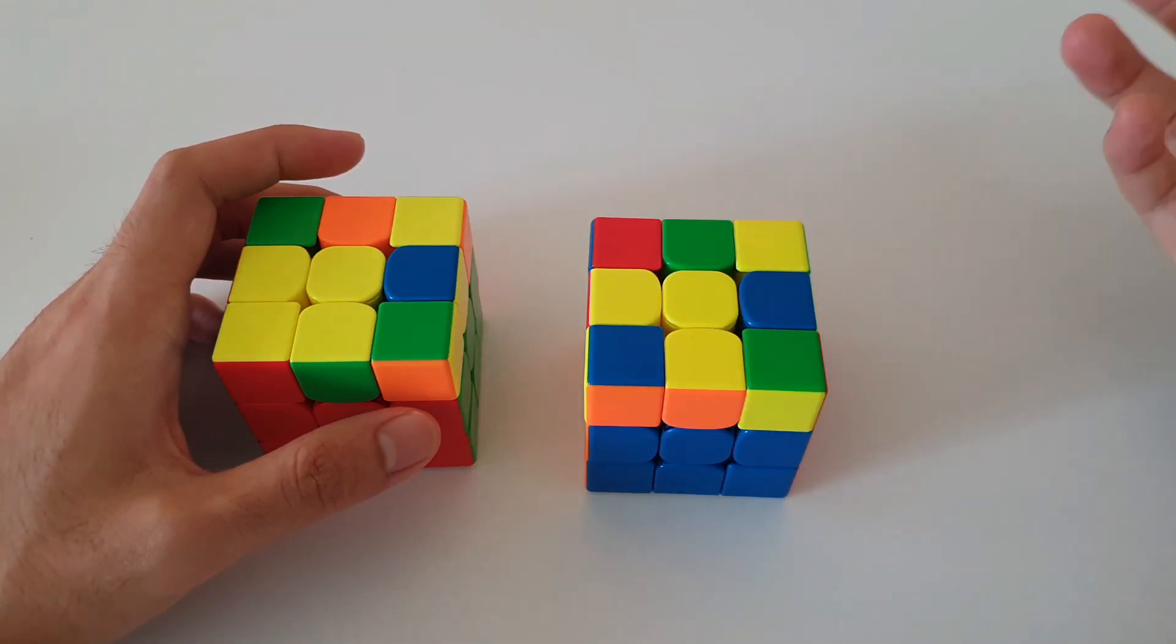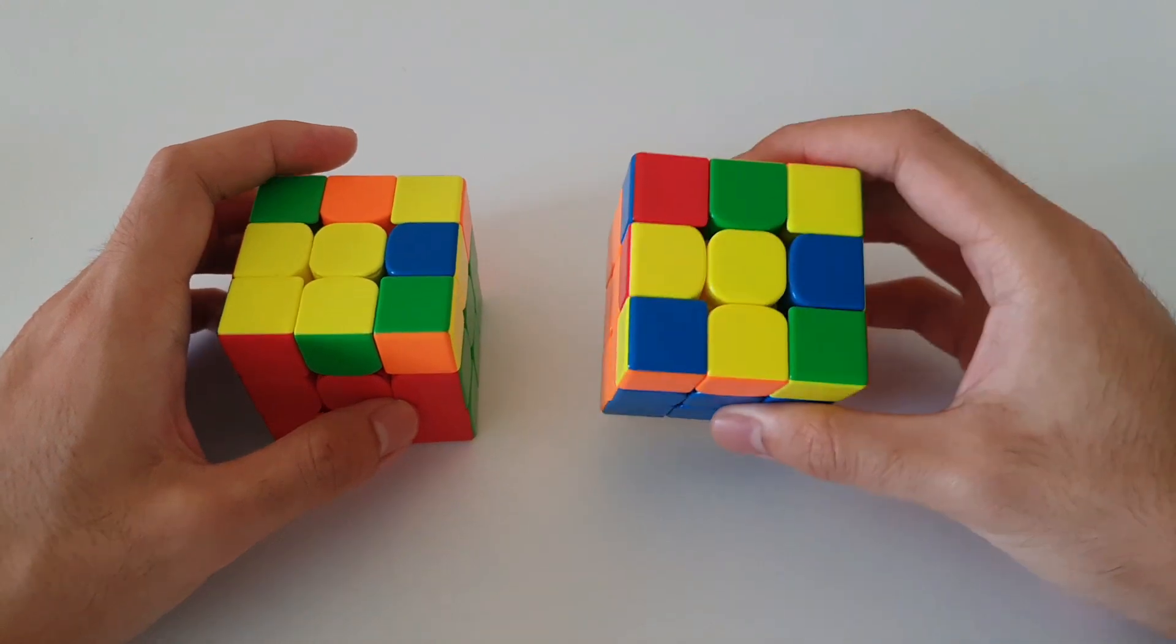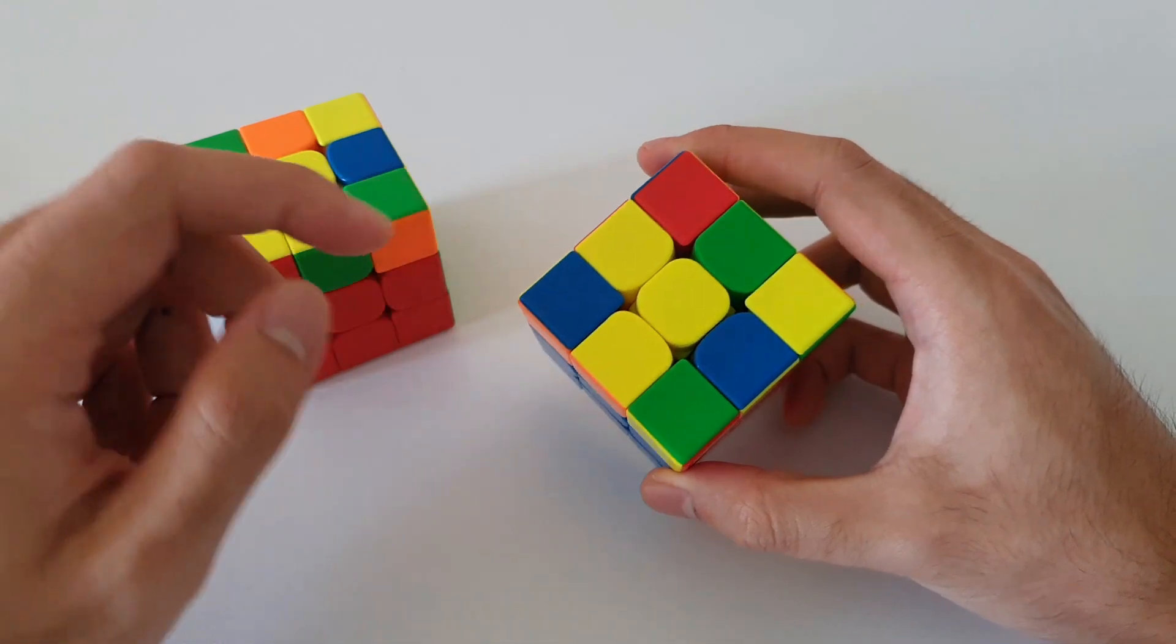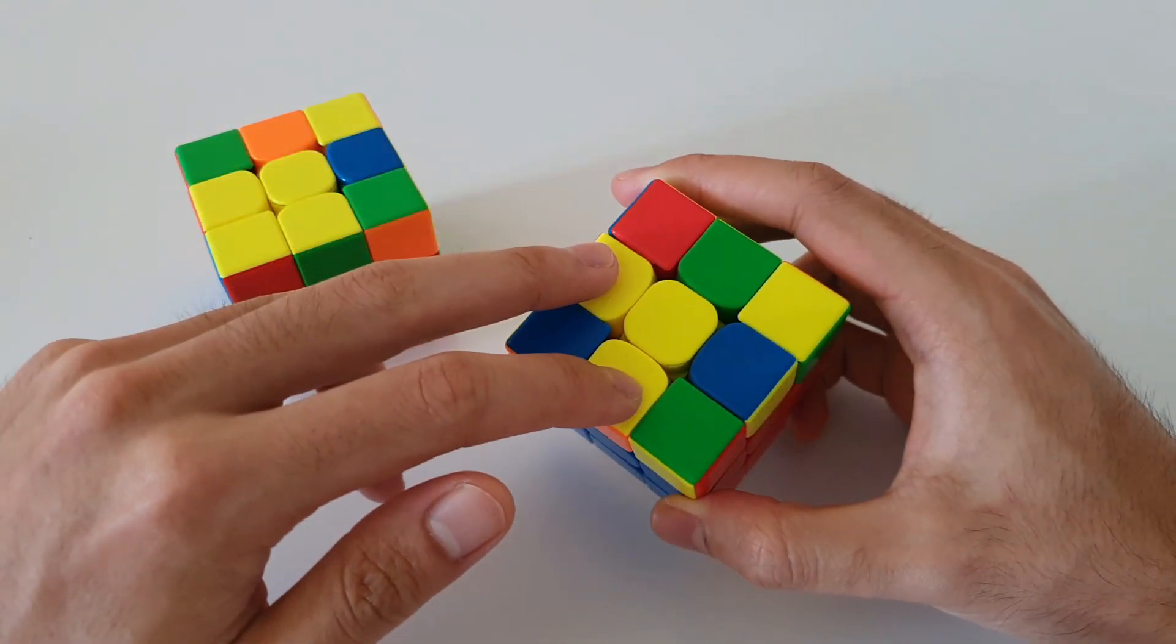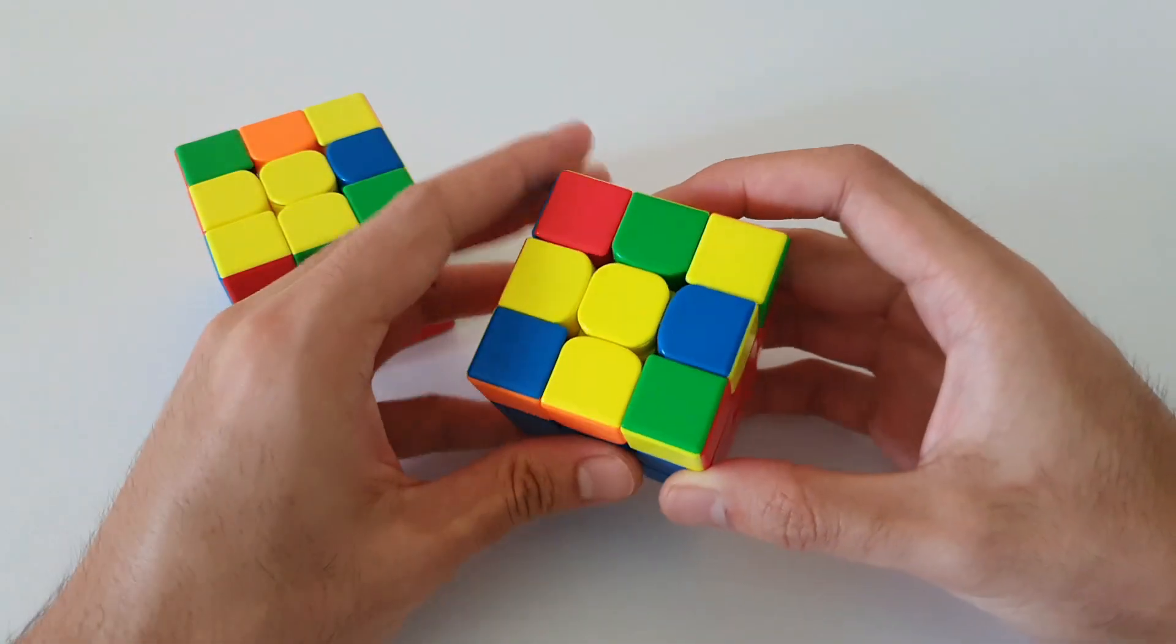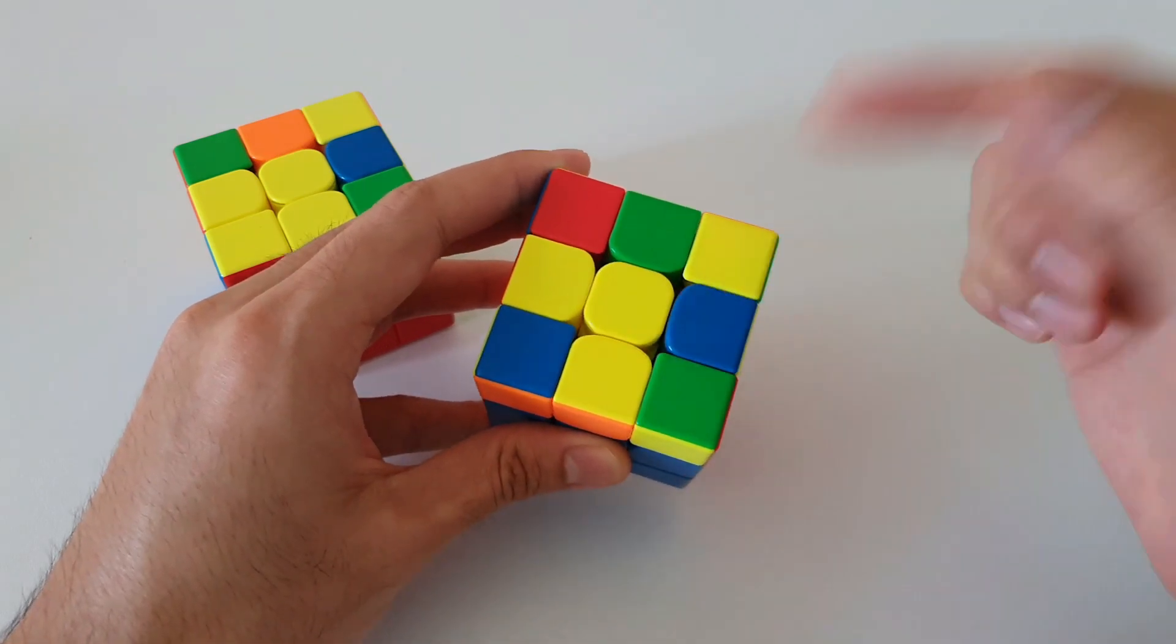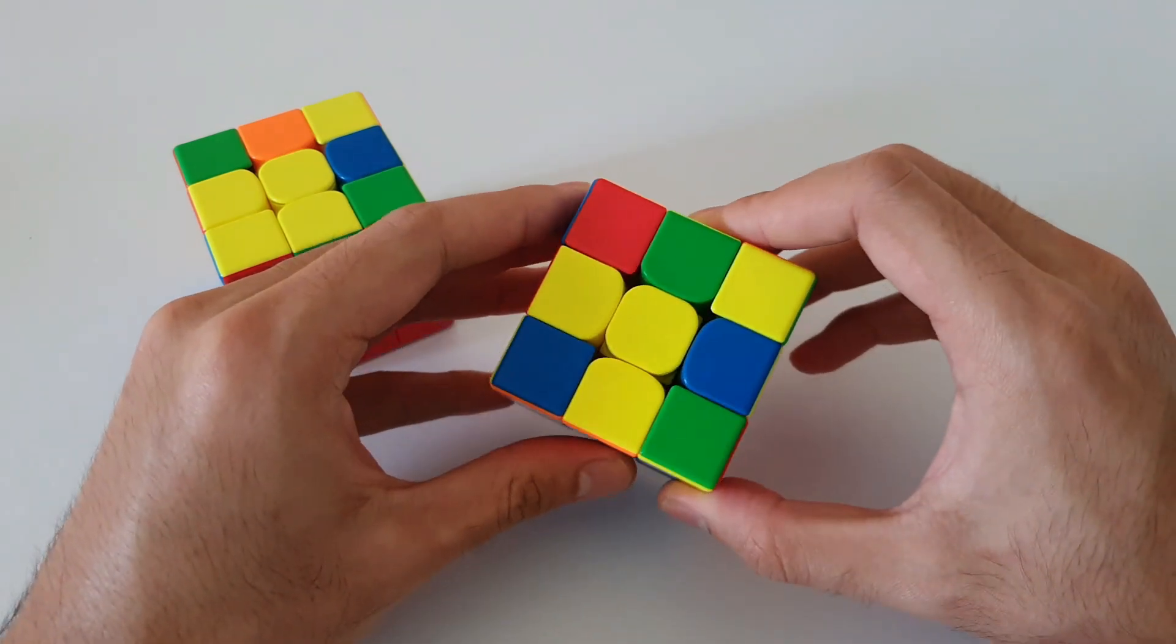So starting off with what is a fish shaped case. As the name suggests, it kind of looks like a fish. Otherwise you can think of it as having two adjacent edges oriented, and the corner across from the two adjacent edges are also oriented. So this is classified as a fish shaped case.